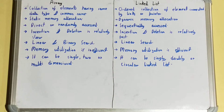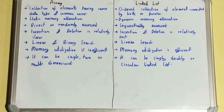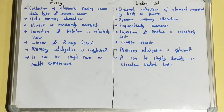For searching, both linear and binary search can be used in an array. However, in a linked list only linear search can be applied. Memory utilization in an array is inefficient because of static memory allocation — a fixed amount of memory is allocated at compile time.